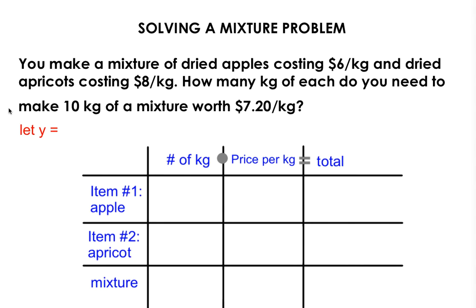Using the information from the word problem, we're going to populate our table that you see here. Notice in the first column, you have the two items, the apple and the apricot, and your mixture.